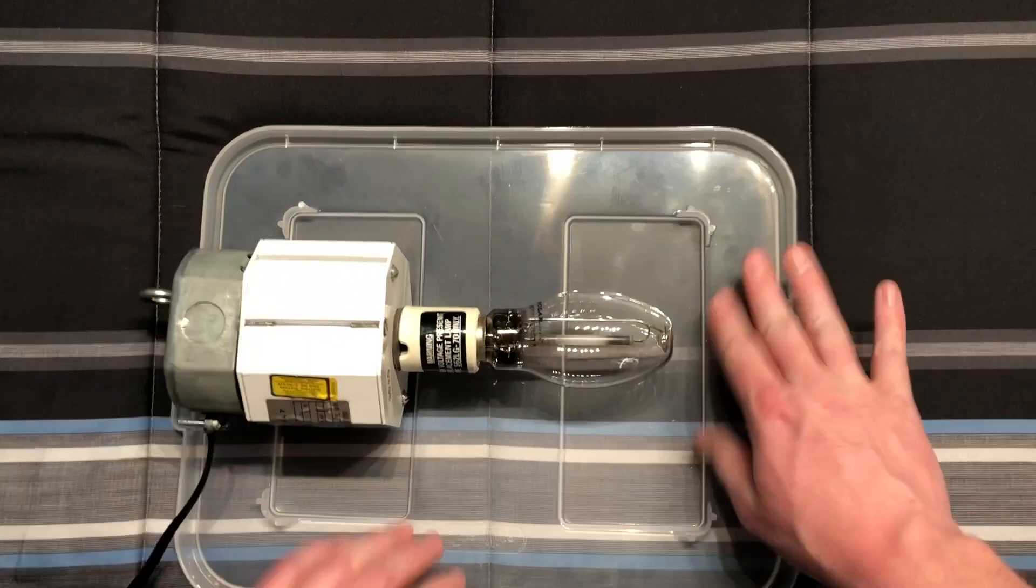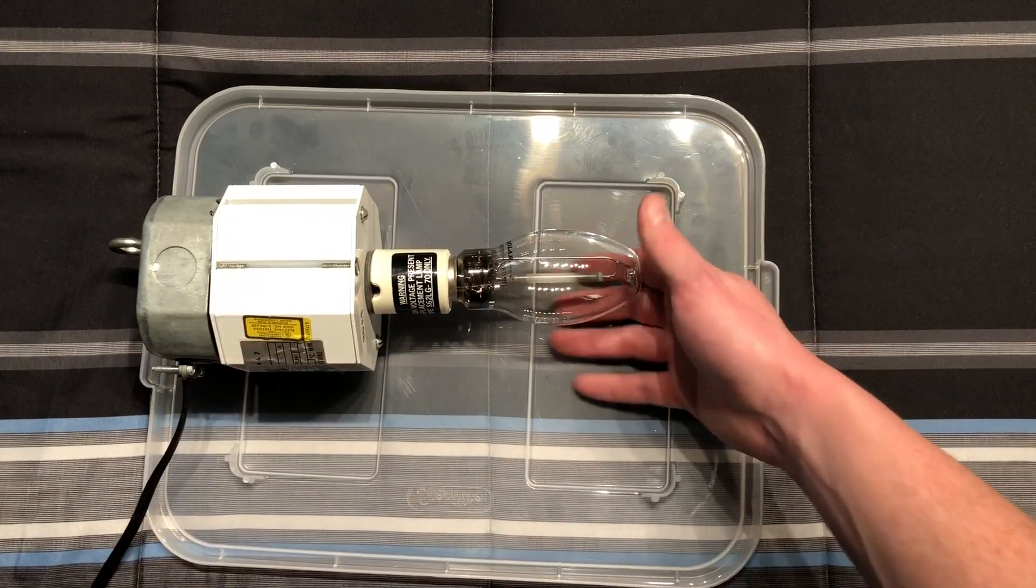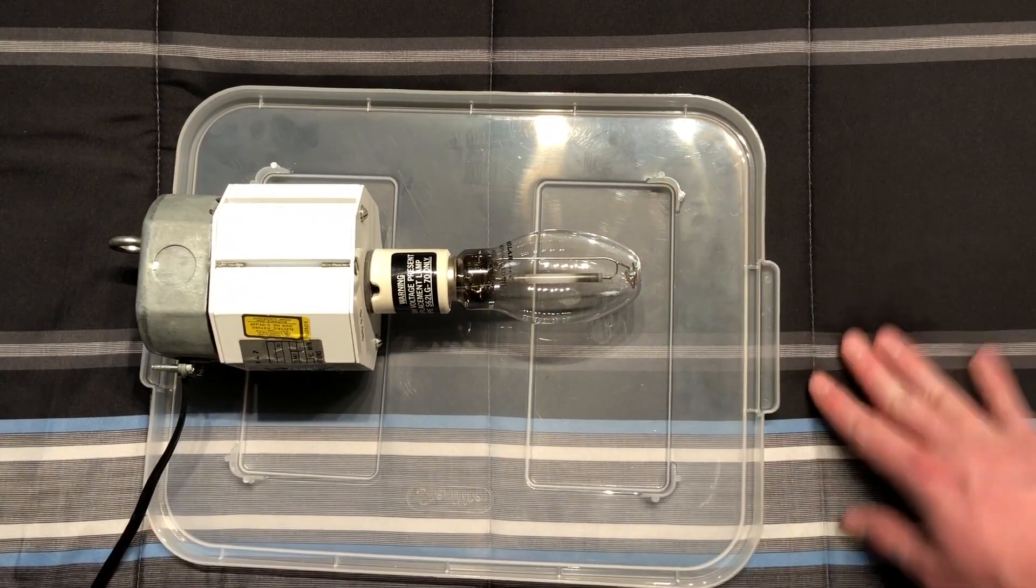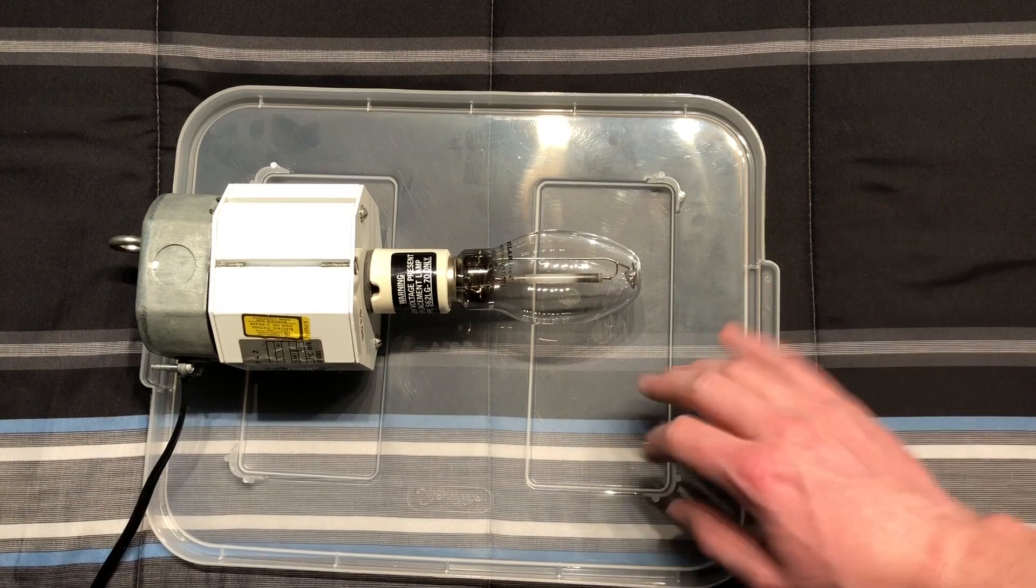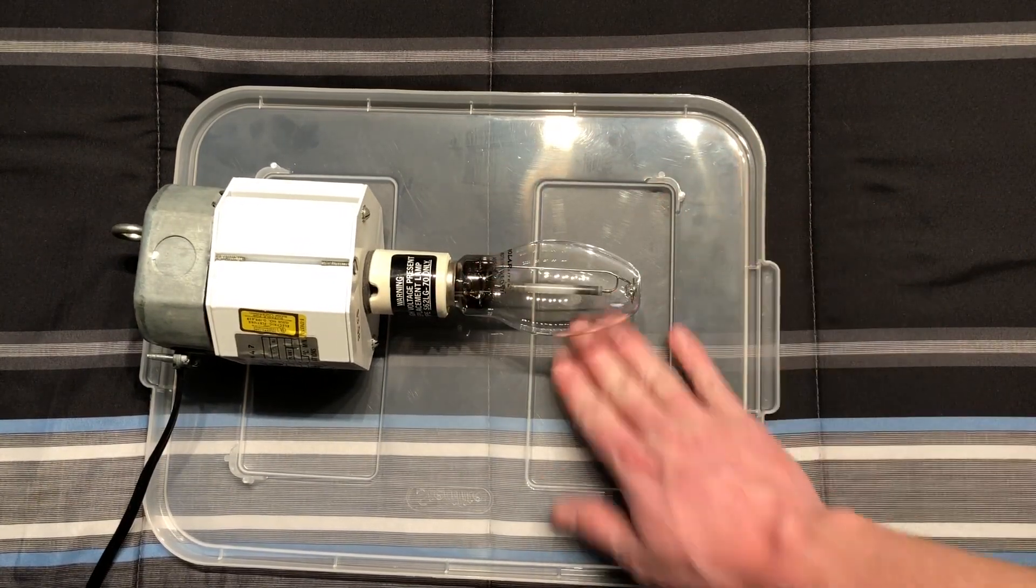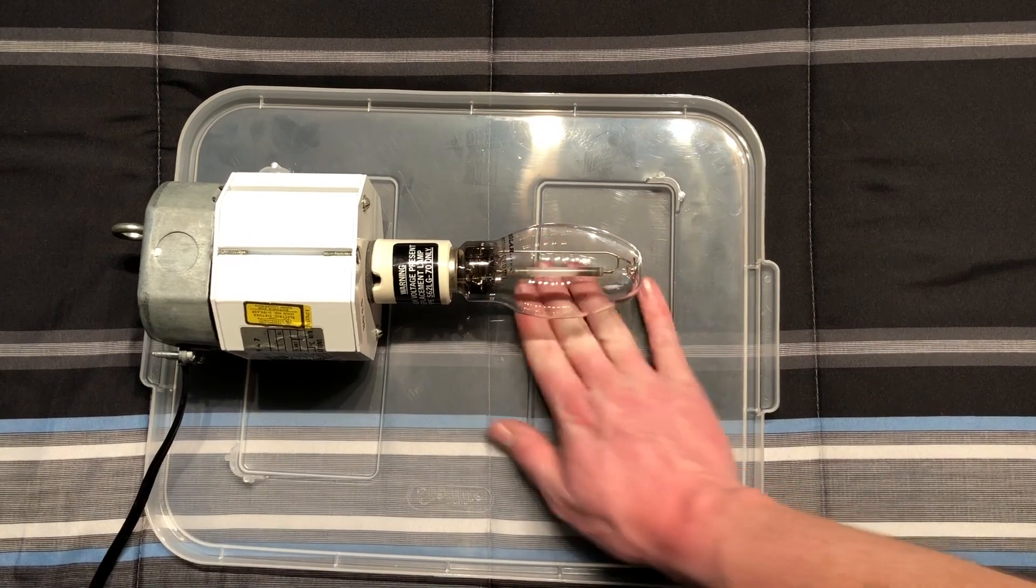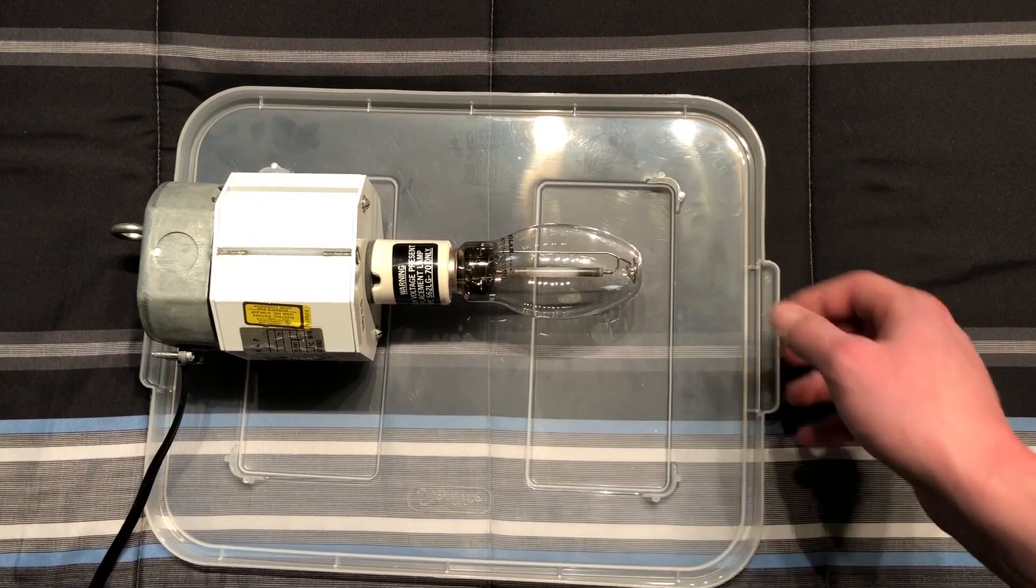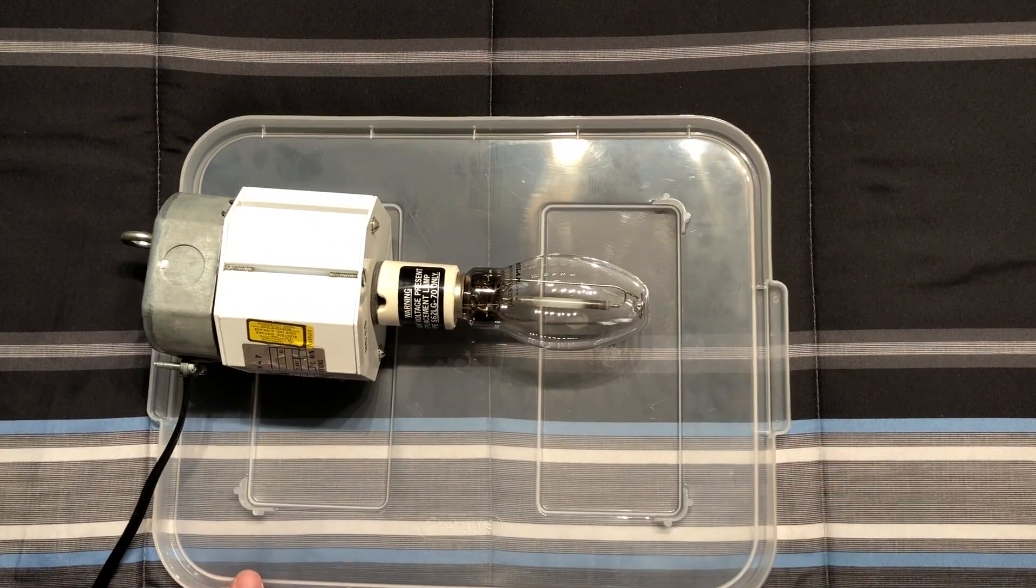Now the reason I have it on this plastic cover is because we don't want any of the heat getting too close to the fabric here. Of course you wouldn't want to leave this type of a light on this close to anything like this too long, and just for demonstration purposes here, we will be just fine.